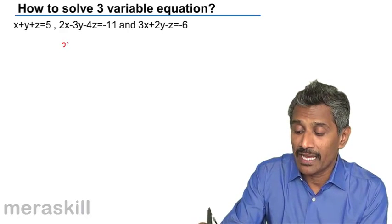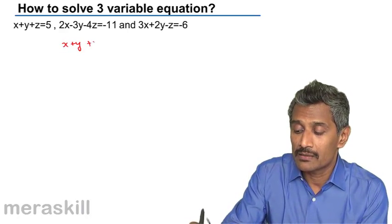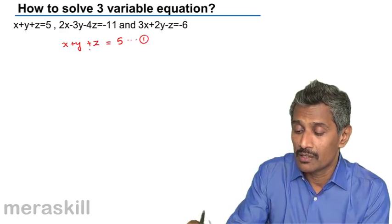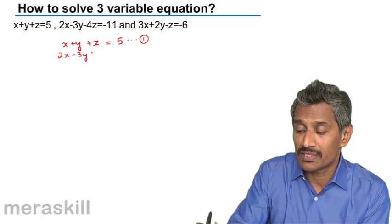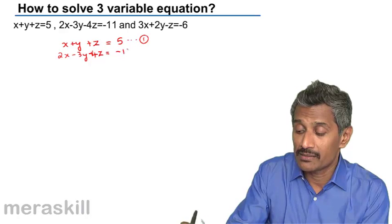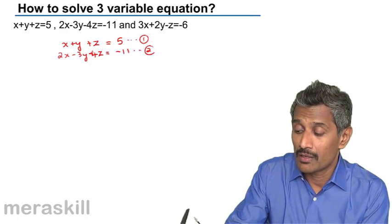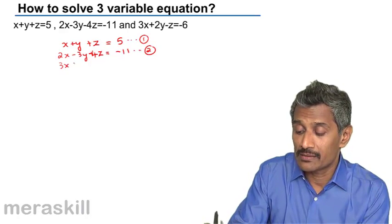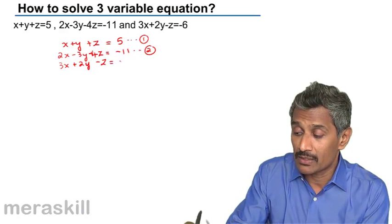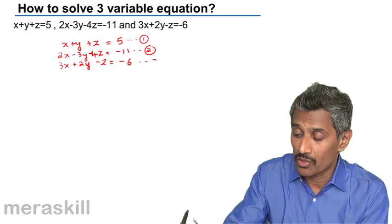You have x plus y plus z is 5, you can call that as equation 1. And you have 2x minus 3y minus 4z is minus 11, that's equation 2. And 3x plus 2y minus z is equal to minus 6, you can call that as equation 3.